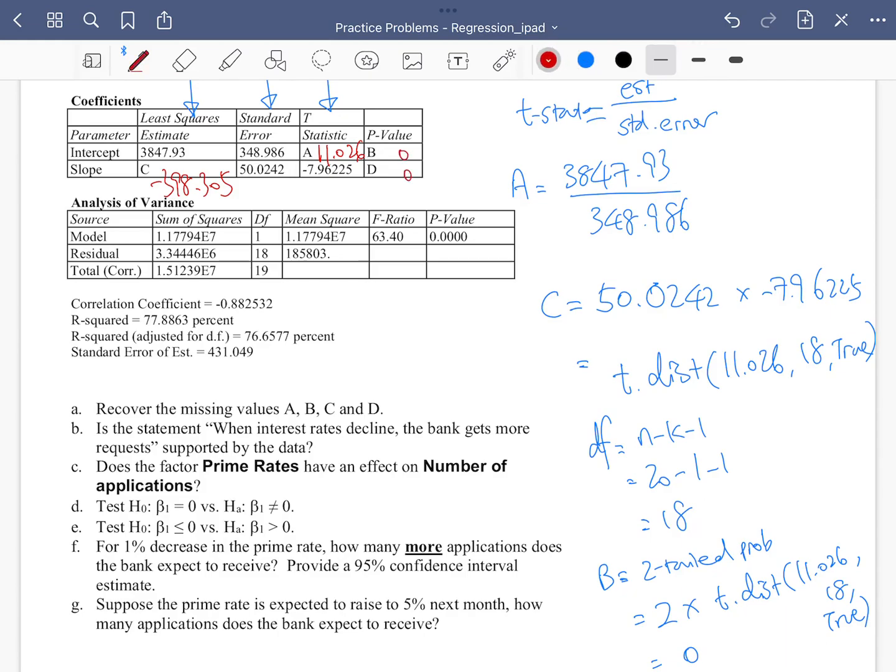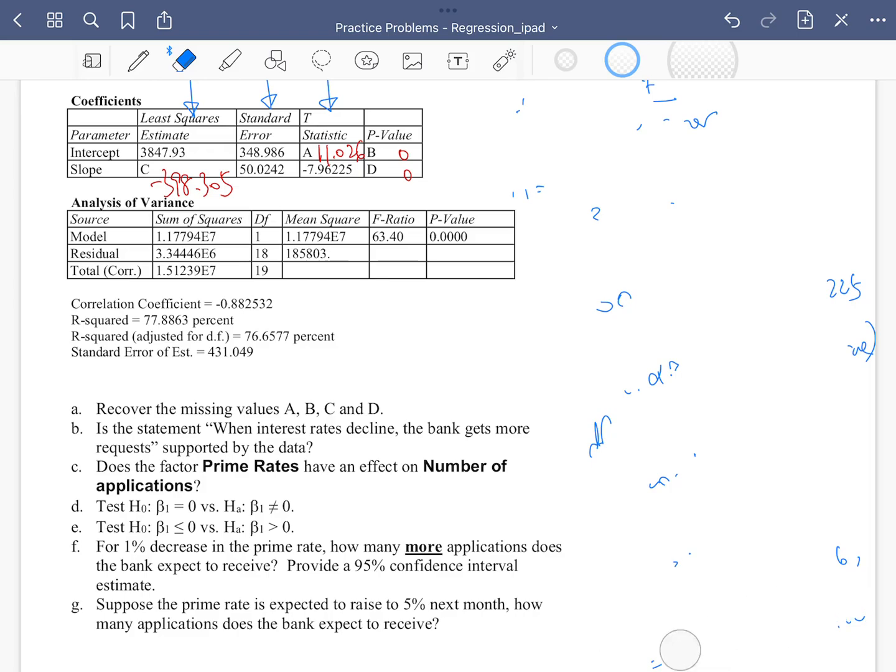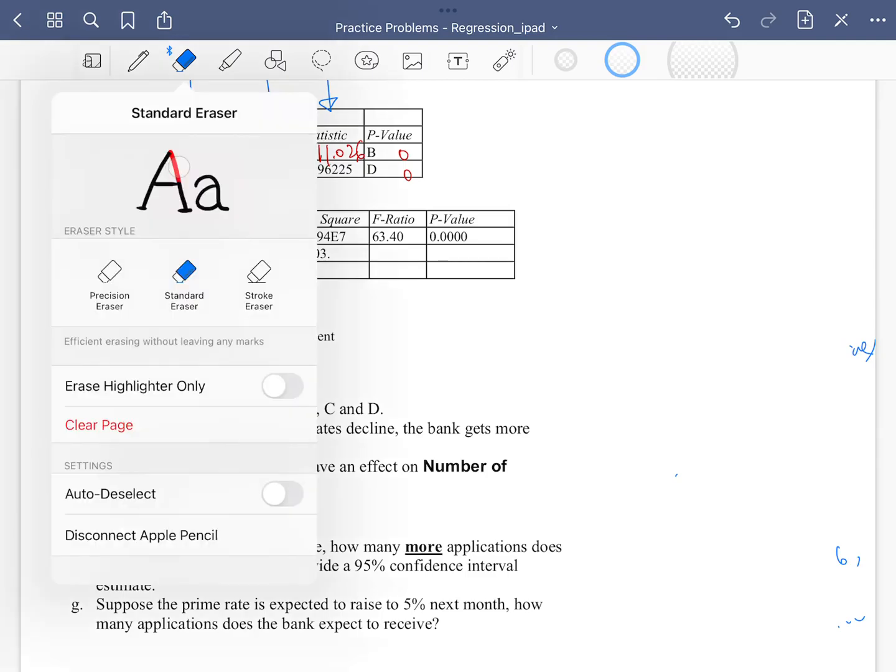So close to zero. You can repeat the same procedure for D as well. That's also close to zero. So we were able to recover A, B, C, D here. Let's take a look at the next question here. The next question is part B. It's the statement when the interest rate declines, the bank gets more requests.